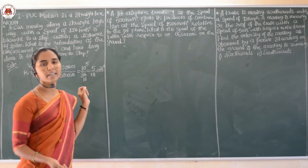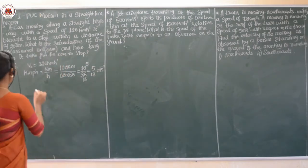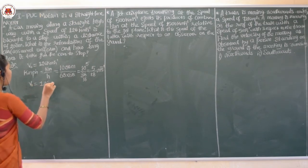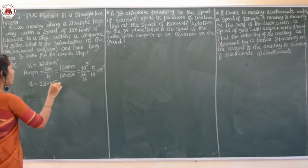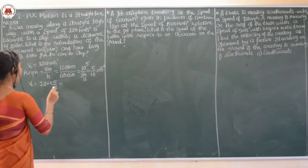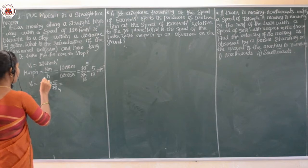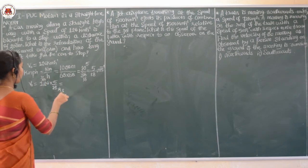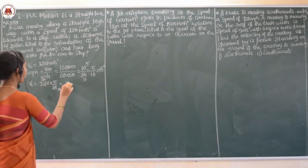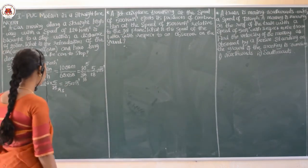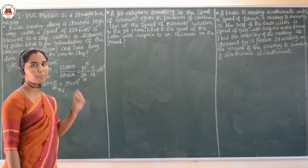So V₀ is equal to 126 multiplied by 5/18. Simplifying by canceling: 126 divided by 18 gives 7, and 7 multiplied by 5 gives 35. Therefore V₀ = 35 meter per second. By the given condition, the final velocity is 0 because the car is stopped, and the distance covered is 200 meter.